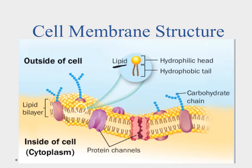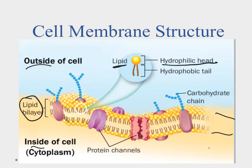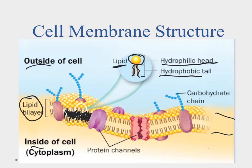Recalling our discussion on lipids and phospholipids: they form a lipid bilayer for the cell membrane, which separates the inside from the outside of the cell. Each phospholipid has a hydrophilic head that likes water, and two fatty acid tails that are hydrophobic — they repel water. Because of this, the tails form a barrier that keeps water either inside or outside the cell.